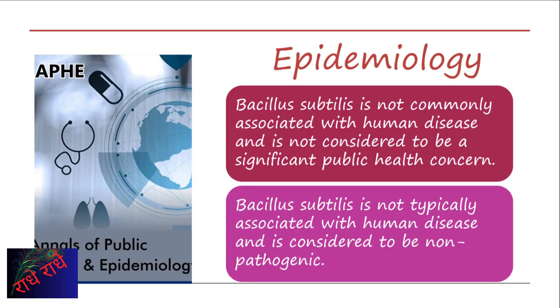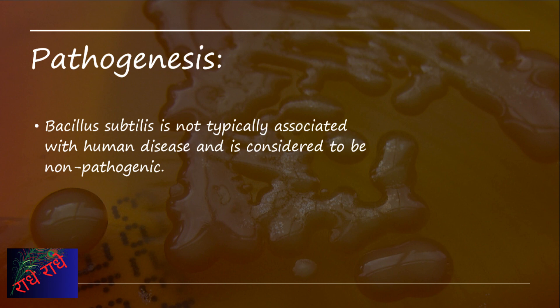Bacillus subtilis, though not considered a pathogen, is still an important bacterium in the scientific world. Found in a variety of ecological niches, it can be used as a model organism to study how bacteria interact with their environment. Its unique characteristics further make it valuable for applications ranging from food production to bioremediation. It has not been associated with any human diseases, though its characteristics and capabilities explain why it is important to study this species.